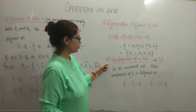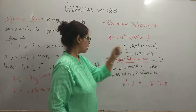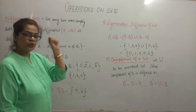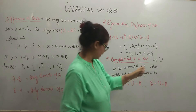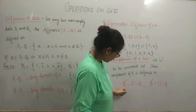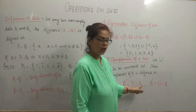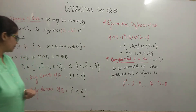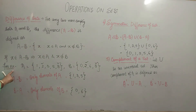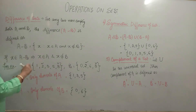The last but very important operation is complement of a set. If U is the universal set, then complement of any set is defined as A complement. We say A complement is equal to U minus A, or B complement is equal to U minus B. Let us try to understand this. We have taken sets A and B, and for these two sets, I consider a universal set U.